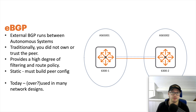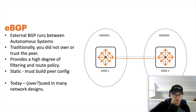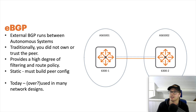Traditionally you would have BGP running between service providers. The service provider would run something like ISIS or OSPF within their own network, and then when they needed connectivity outside their network they would use eBGP to peer with devices they didn't own and didn't trust. BGP's focus includes scale, but it also gives you a high degree of filtering and route policy, with lots of attributes to control and manipulate ingress and egress traffic.